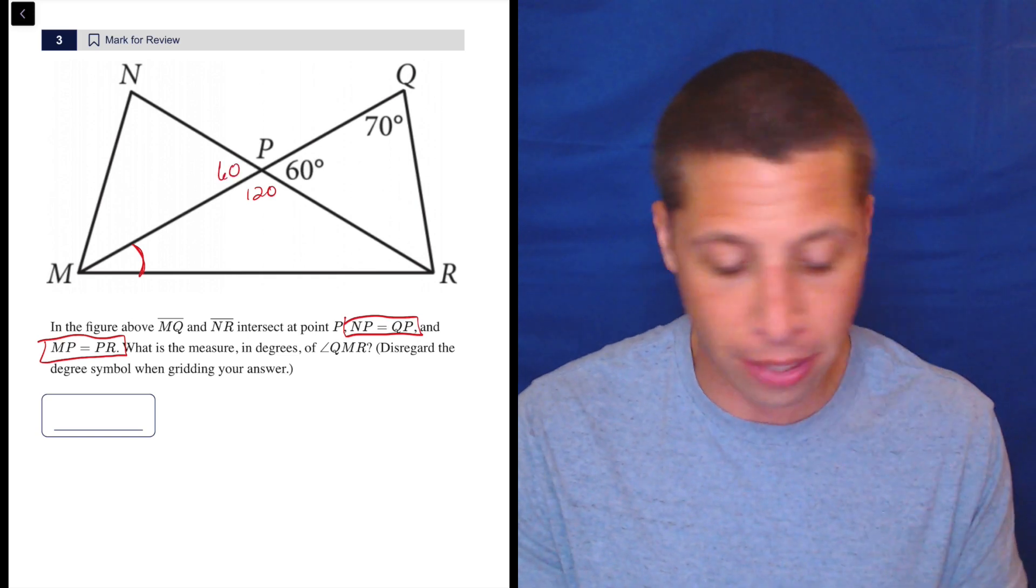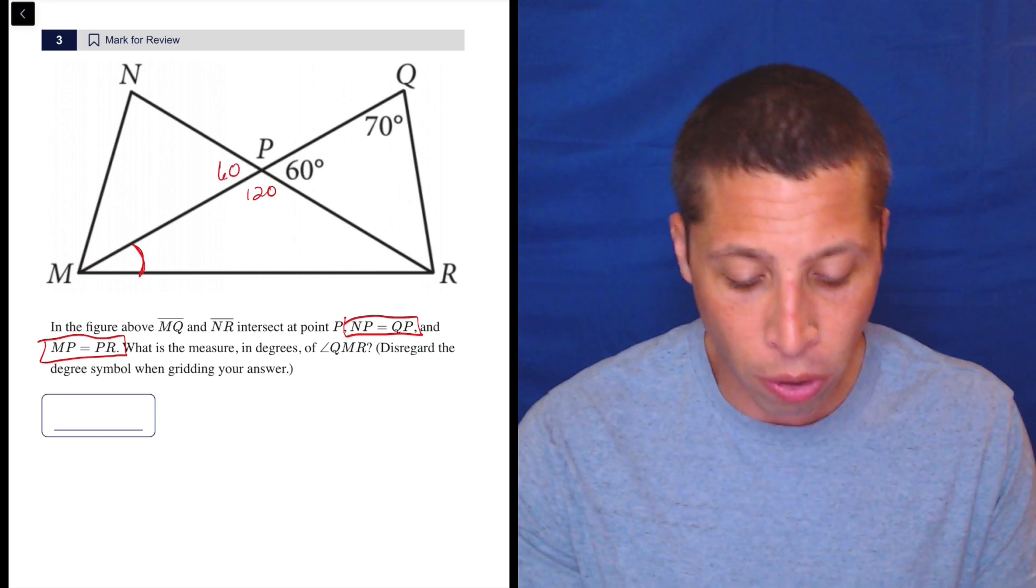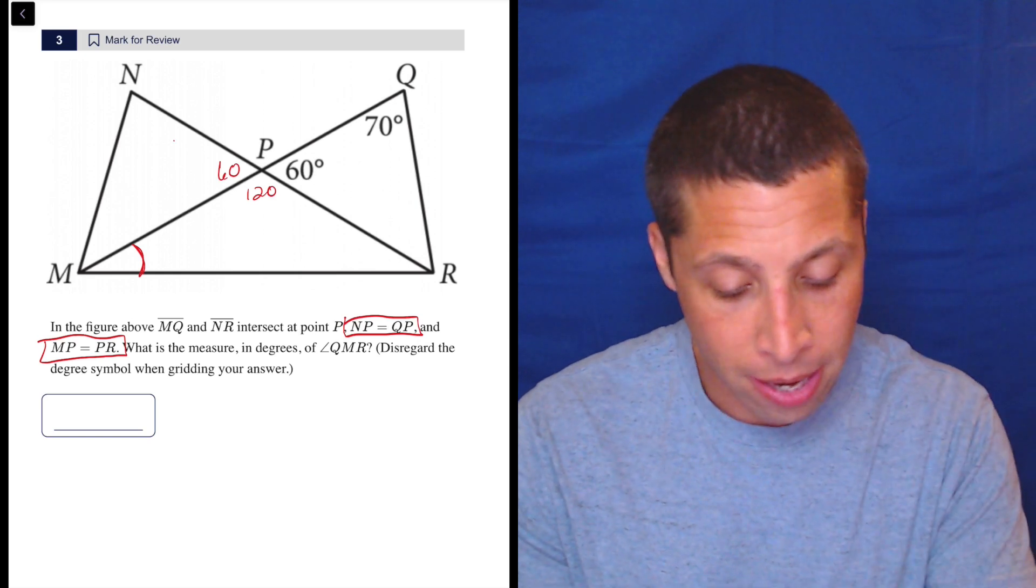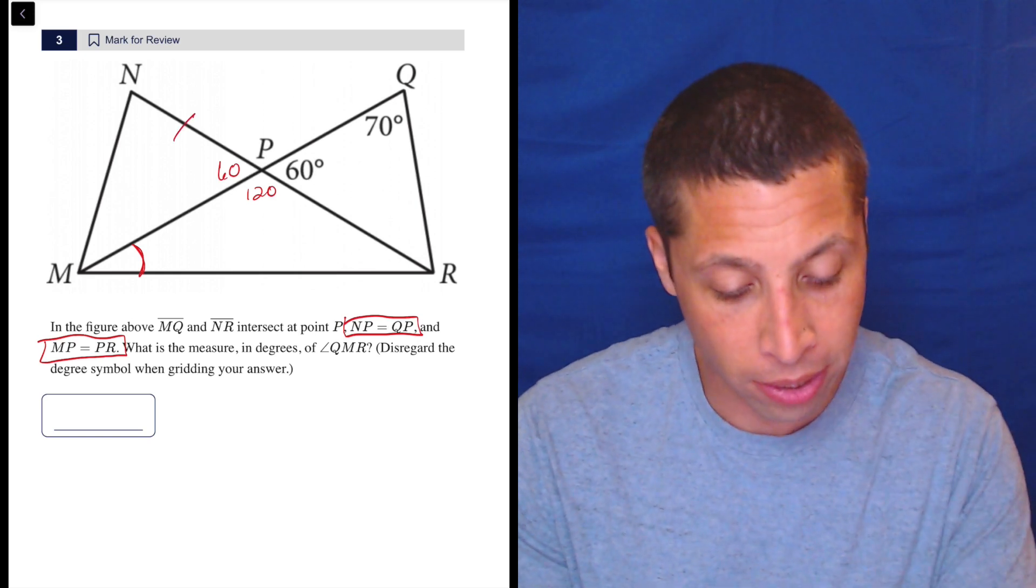We can also put 60 here, but it doesn't really do me much because now I'm in the triangle. And that's perfect, right? So look at what they're telling me. They're telling me NP here is equal to—actually, let's do this. NP is equal to QP.